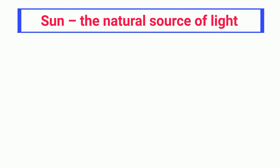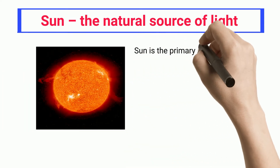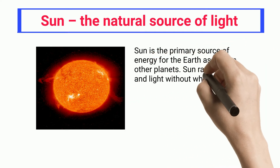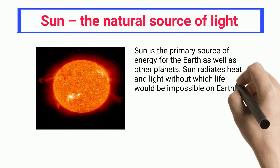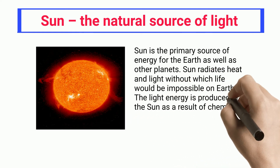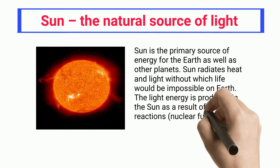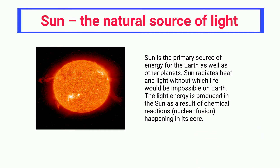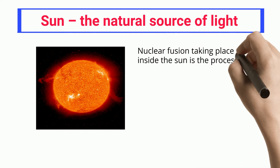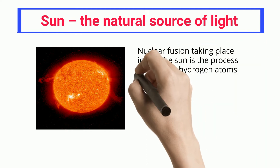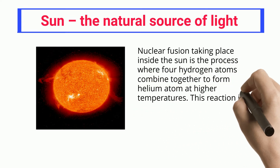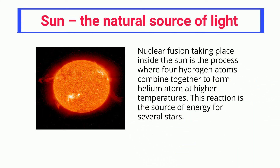Sun — The Natural Source of Light. Sun is the primary source of energy for the Earth as well as other planets. Sun radiates heat and light without which life would be impossible on Earth. The light energy is produced in the Sun as a result of chemical reactions — nuclear fusion — happening in its core. Nuclear fusion taking place inside the Sun is the process where four hydrogen atoms combine together to form a helium atom at higher temperatures. This reaction is the source of energy for several stars.